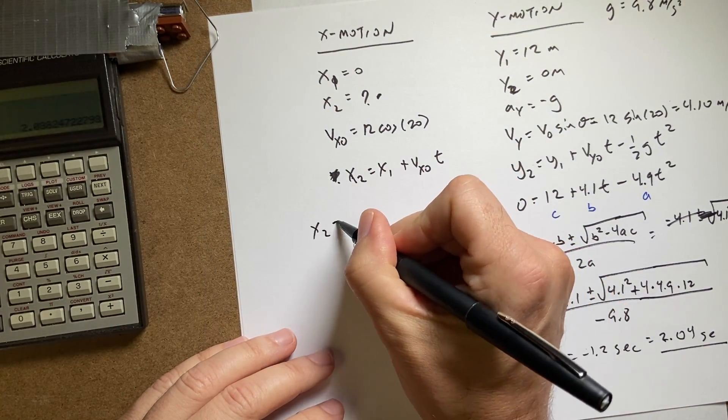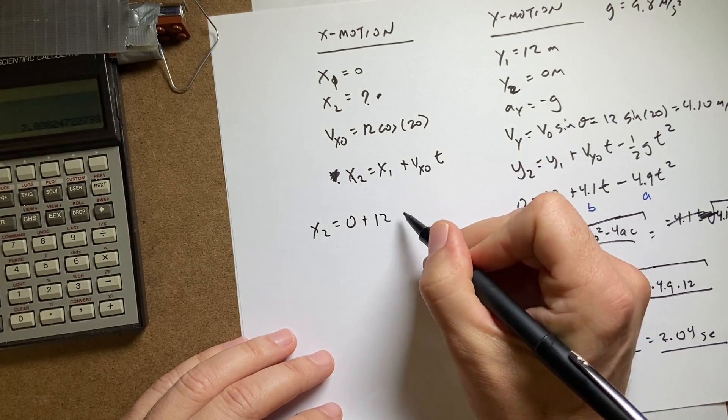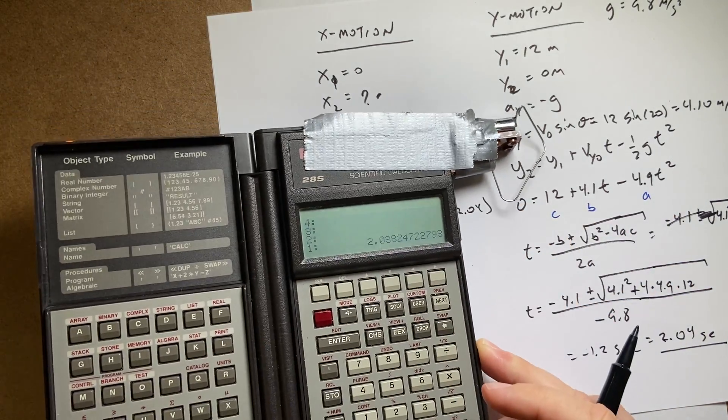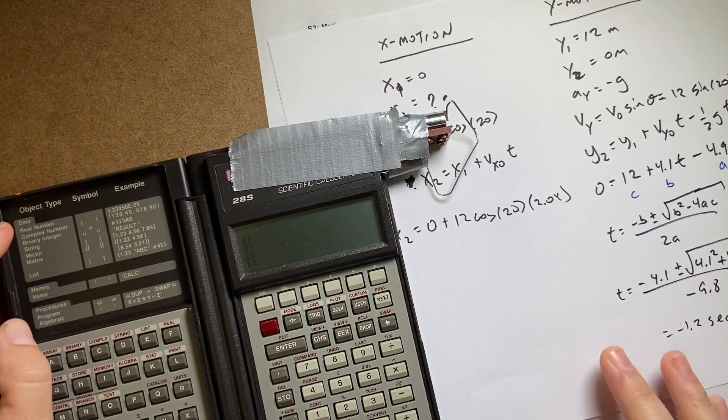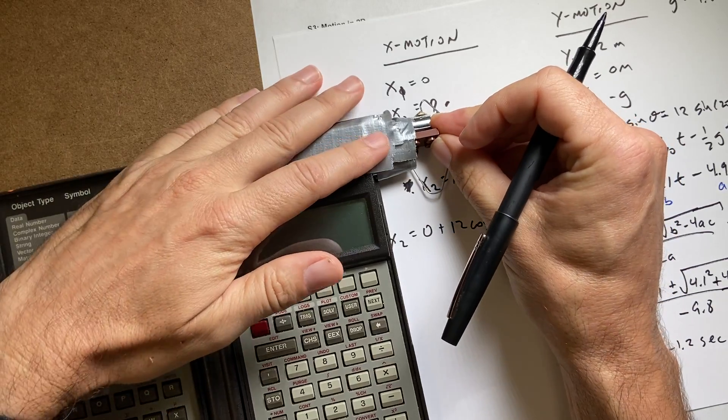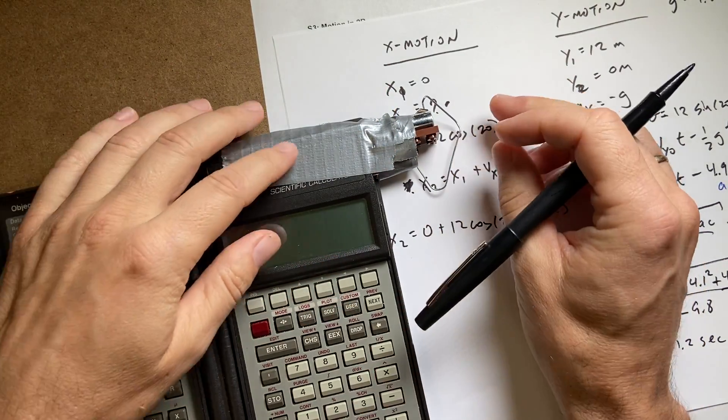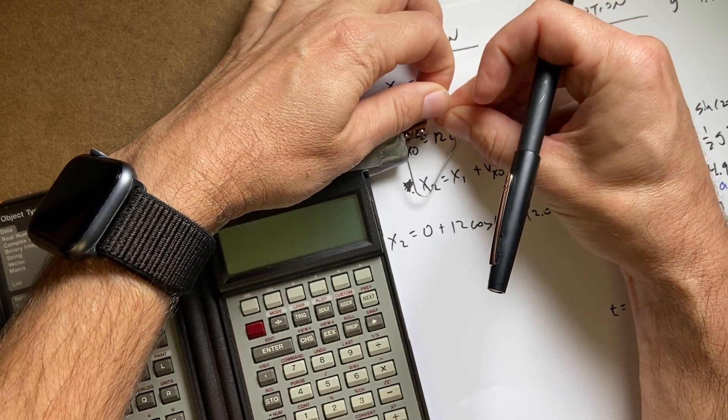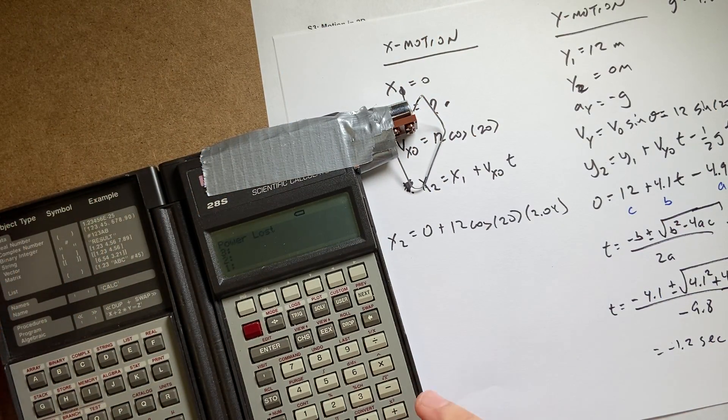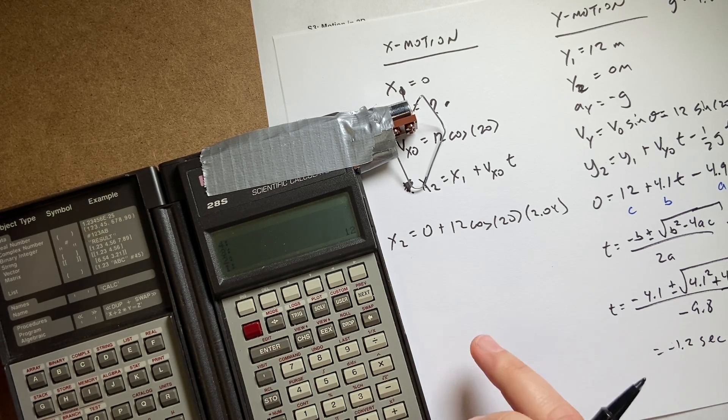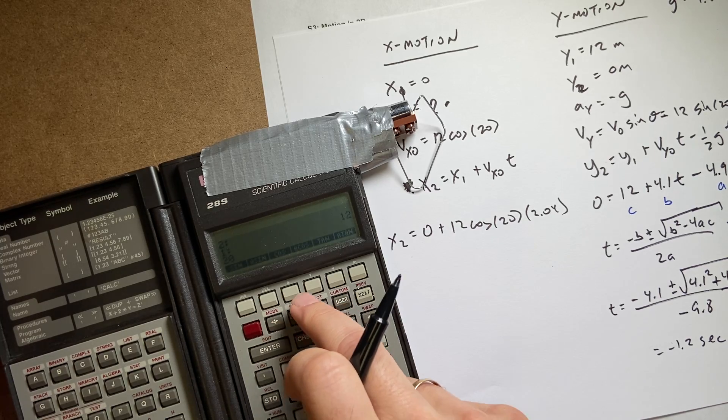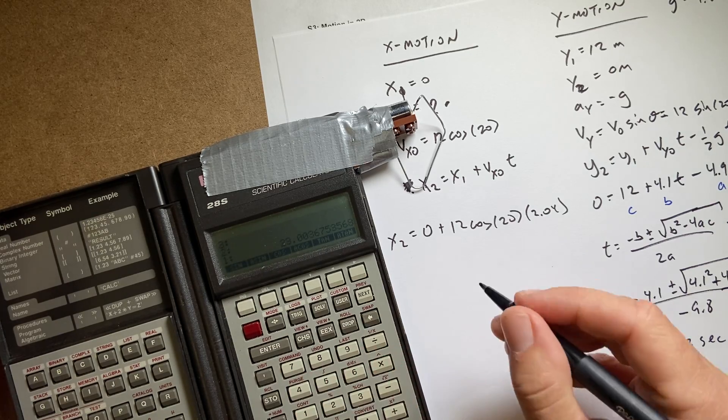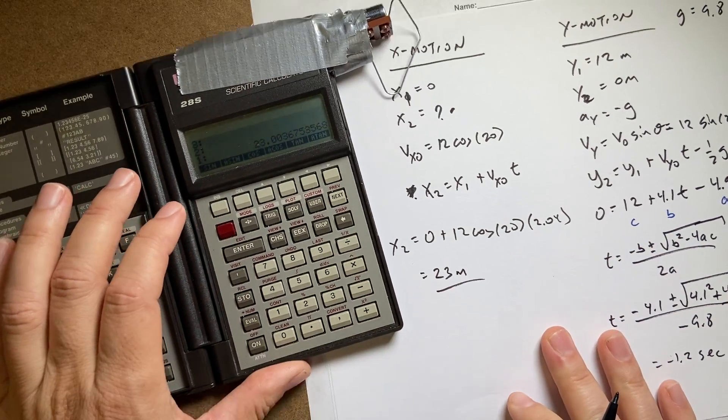So now I can go up here. x2 equals x1 which is 0 plus the initial velocity 12 cosine of 20 times the time of 2.04. And let's put that in my calculator. I have to be careful my battery will fall out. My impromptu battery fell out. Magnet goes right there. So this is going to be 12 enter, 20 trig cosine times 2.04 times. And I get 23 meters at the end.